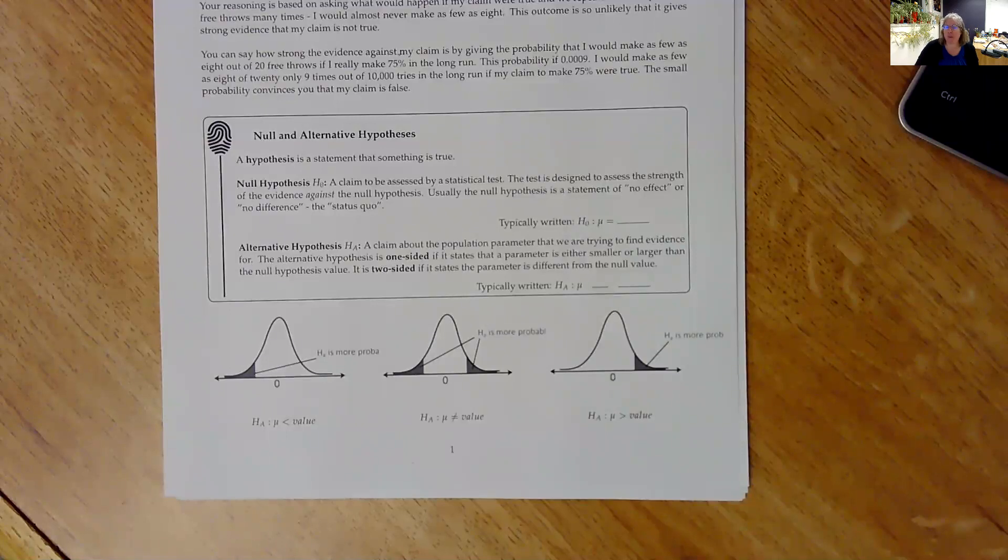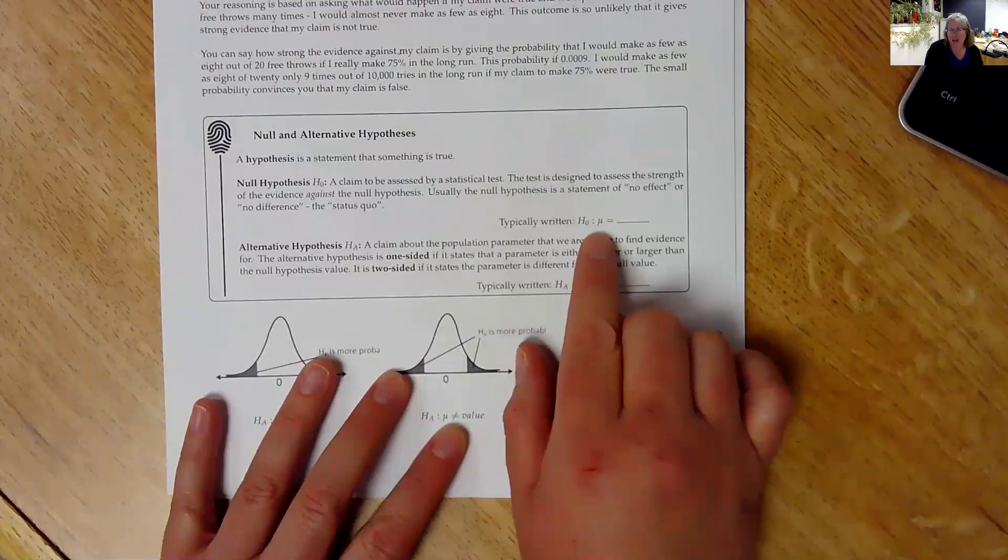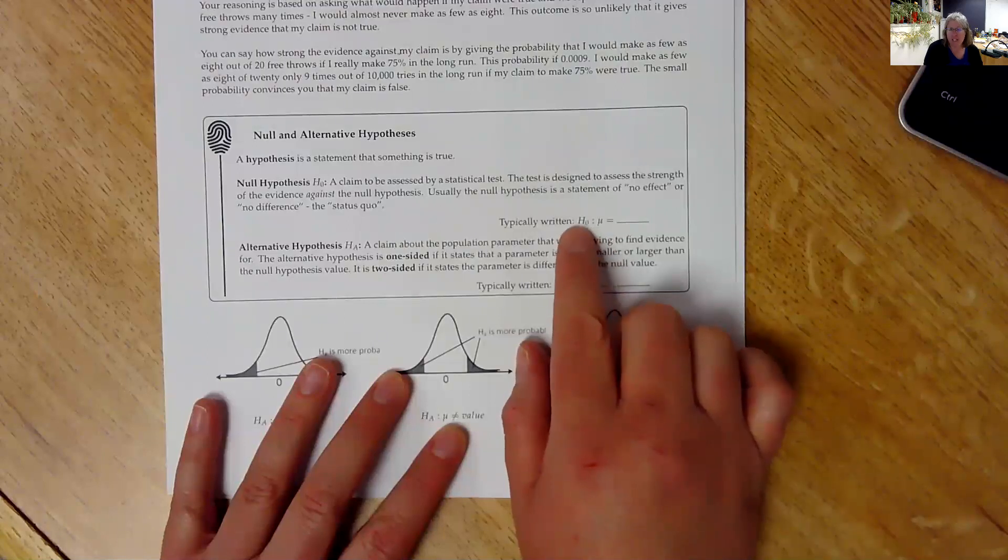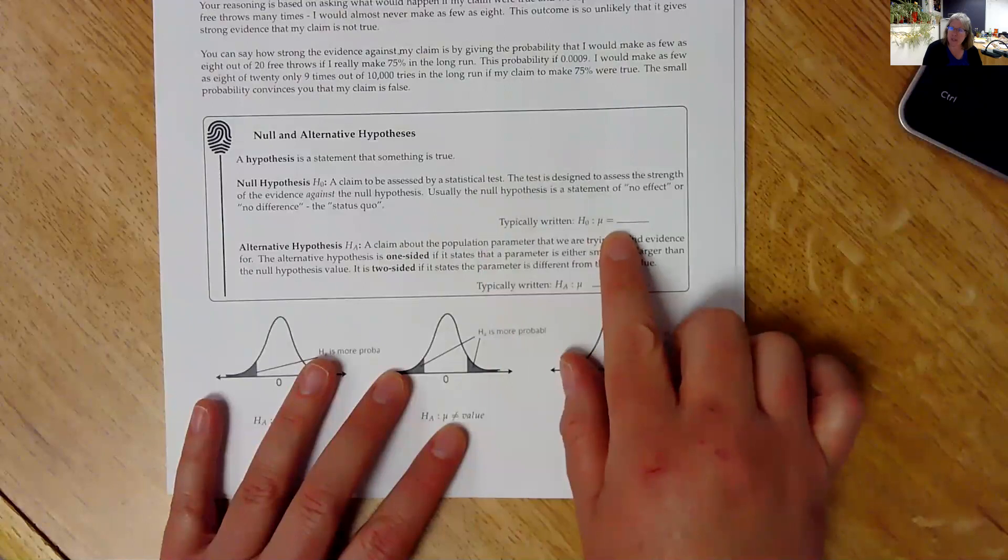We have two hypotheses that we're going to look at. The null hypothesis is kind of the status quo. It's a claim being made often by an authority or a company. So suppose I'm looking at light bulbs. The company says the light bulb lasts an average of 700 hours. That would be my null hypothesis. My null hypothesis is written with H with a little zero down kind of as a subscript. That's the notation saying that this is the null hypothesis.